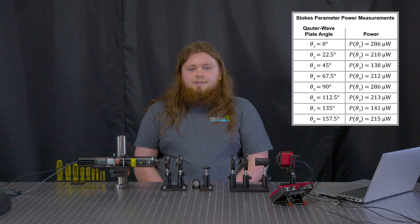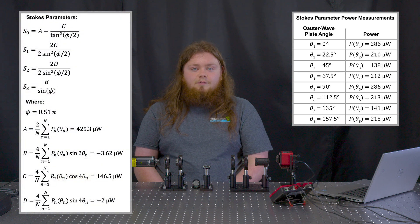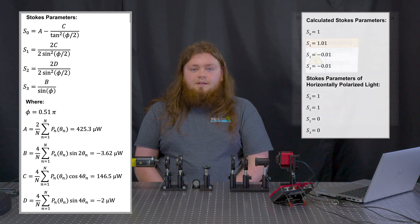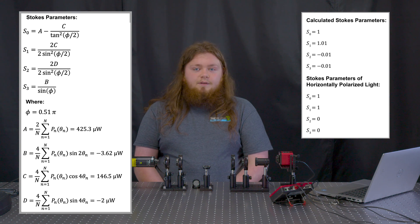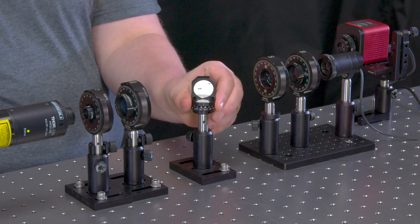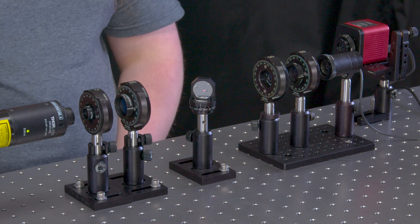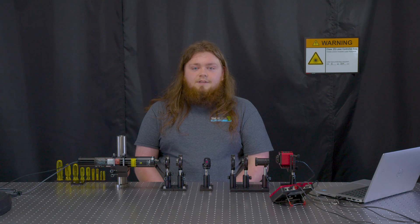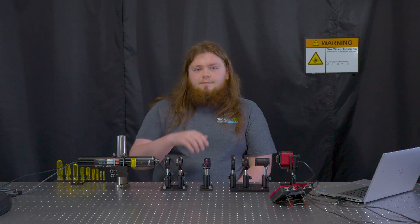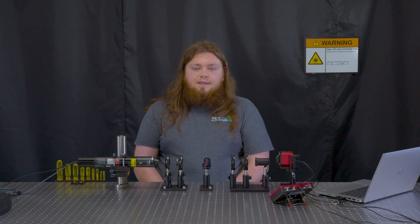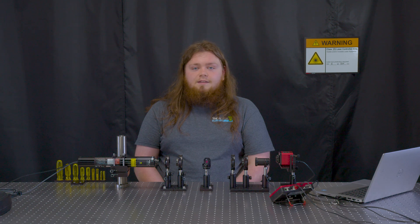Now, with our eight power measurements, we can calculate the Stokes parameters of the light input to the polarimeter. In this case, I've added a correction factor, which is just the measured retardance of the wave plate in radians. We can see from the Stokes parameters that the light is horizontally polarized. That means that if I place a mirror in the beam path such that the beam height is maintained, the light will form a plane that is horizontal to the table. A horizontal plane corresponds to p-polarized light incident on the mirror with this orientation. It's important to note that if the beam height is not maintained, the plane will no longer be horizontal and the light incident on the mirror will no longer be p-polarized even though the linear polarization state itself didn't change.